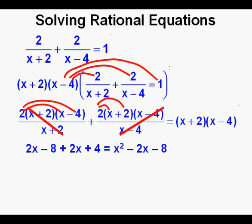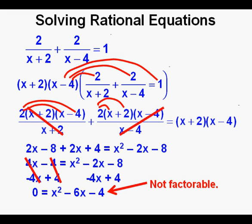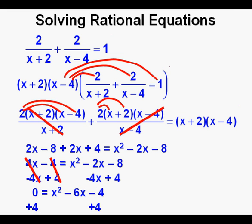That already looks a lot simpler. Combining like terms on the left side we have 4x minus 4. I'll subtract 4x and add 4 at the same time to both sides of the equation. The terms on the left side cancel each other out, and we have 0 equals x squared minus 6x minus 4. I tried to solve by factoring but couldn't find factors of negative 4 that add up to negative 6. Since the coefficient of the x term is an even number, negative 6, we can solve by completing the square. Adding 4 to both sides gives us 4 equals x squared minus 6x.